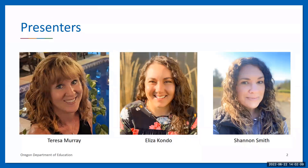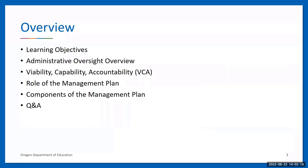First, I'll go over our learning objectives for this training. Then Teresa will go over administrative oversight and VCA — viability, capability, and accountability. Eliza will then go over the role of the management plan, which will be required for all sponsors starting with the fiscal year 2023 renewal application, including school food authorities. After that, Shannon will walk you through the CNP Web Management Plan, and finally we will have time for Q&A with Darcy.